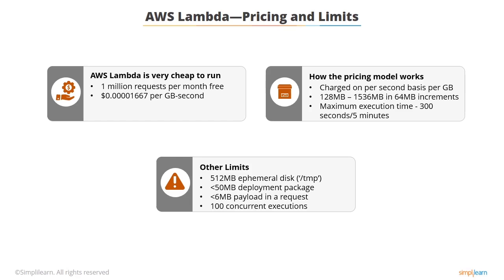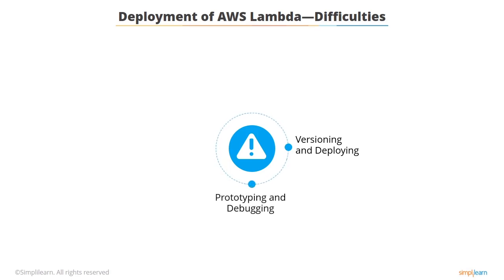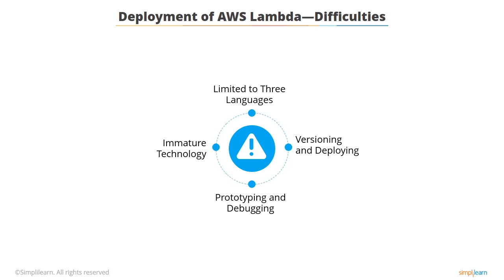Some limits can be reviewed and increased by raising a support case. As AWS Lambda and serverless architectures are very new, there are some difficulties you may encounter and the ecosystem is still very much evolving. Versioning and deploying Lambda functions can sometimes be difficult, though tools from both AWS and third parties are starting to assist. Prototyping and debugging can also be difficult, but these problems are being worked on. Lastly, Lambda is currently limited to three languages; while many discuss using PHP, Ruby, or even C++ and Golang binaries, these aren't strictly supported by AWS.